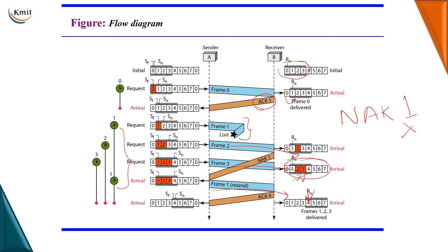In summary, in Go-Back-N ARQ, you must go back and resend all frames from the lost one onwards, whereas in Selective Repeat ARQ, you only retransmit the specific frame that was lost. This is the most optimized solution among all data link layer protocols. That concludes the discussion on both noiseless channel and noisy channel protocols of the data link layer.